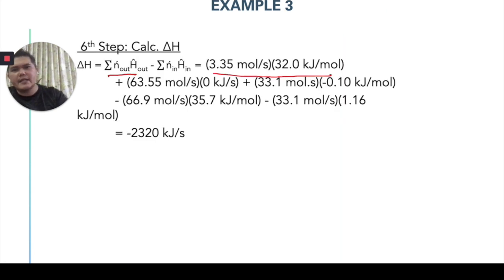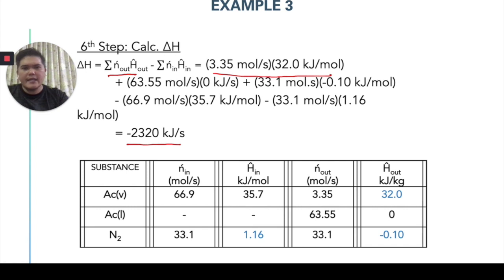This is where actually it is highlighted in this equation. So, you'll be able to get in total you get ΔH is negative 2320 kilojoule per second. And then, when you calculate that, then you'll be able to determine what will be the cooling rate required.